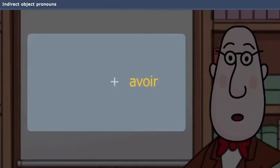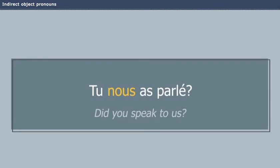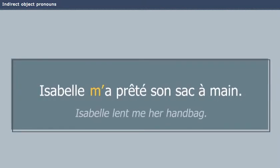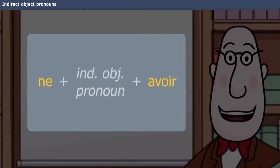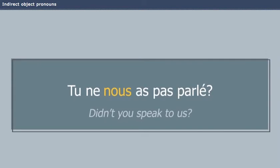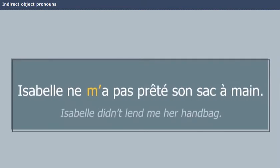And in the passé composé, the indirect object pronoun comes before avoir. Tu nous as parlé? Isabelle m'a prêté son sac à main. In a negative sentence, place the indirect object pronoun between ne and avoir. Tu ne nous as pas parlé? Isabelle ne m'a pas prêté son sac à main.